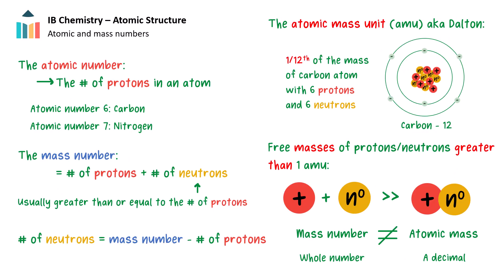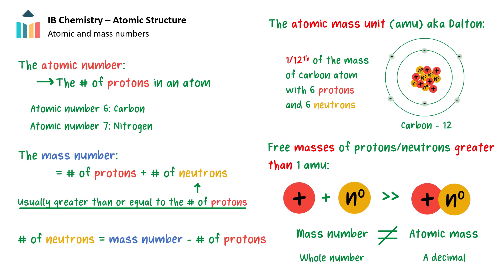The number of protons in an atom is called its atomic number. Increasing the atomic number changes the element. The number of neutrons is usually equal to or greater than the number of protons. The sum of the proton and neutron numbers — i.e. the number of nucleons — gives the mass number. Therefore, the number of neutrons equals the mass number minus the atomic number.